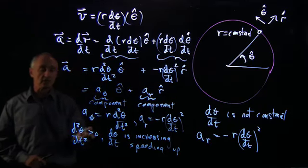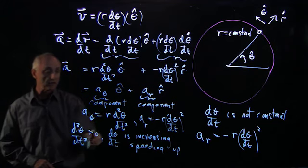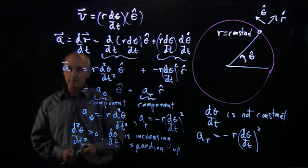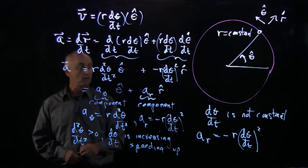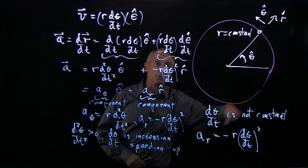In a similar fashion, it's easy to understand that when d²θ/dt² is negative, then dθ/dt is decreasing. And so it can be slowing down. Or if it slows down and stops, it can start to move in the other direction.